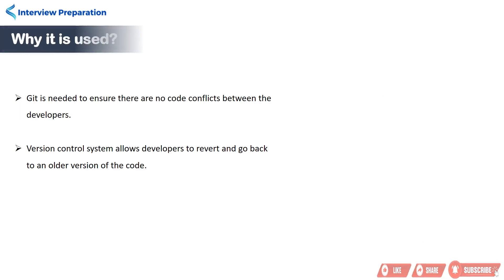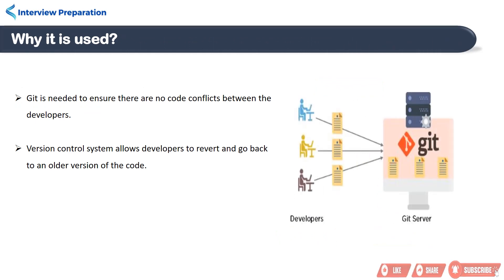Now, why is Git used? Real-life projects generally have multiple developers working in parallel, so a version control system like Git is needed to ensure there are no code conflicts between the developers.